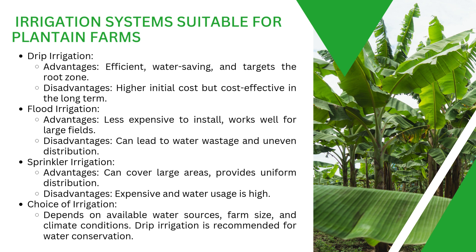The second option is flood irrigation. This is less expensive to install and suitable for large fields. It is a system that allows water to flow across the field. The disadvantages are that you waste water and there is uneven distribution, because the speed of the water takes it to different locations.